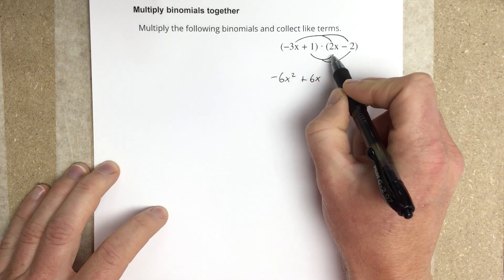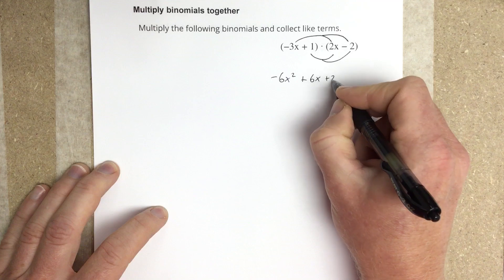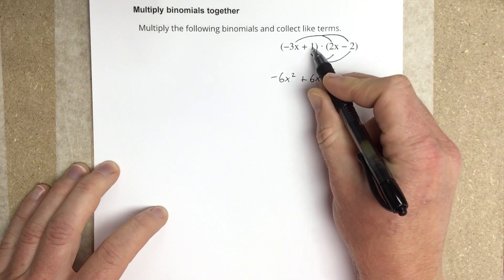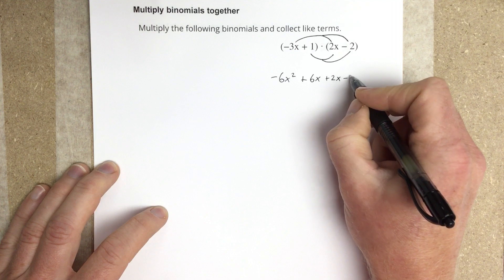And we go to 1 and multiply it times the 2x, so that's just 2x. And then the 1 times the negative 2 will be minus 2.